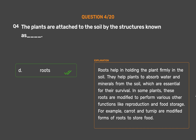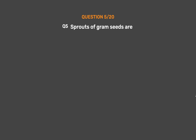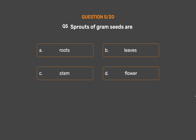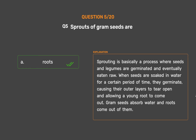In some plants, roots are modified to perform various other functions like reproduction and food storage. For example, carrot and turnip are modified forms of roots to store food. Question 5: Sprouts of gram seeds are — Option A: Roots, Option B: Leaves, Option C: Stem, Option D: Flower. The correct answer is Option A, Roots. Sprouting is a process where seeds and legumes are germinated and eventually eaten raw. When seeds are soaked in water for a certain period of time they germinate, causing their outer layers to tear open and allowing a young root to come out. Gram seeds absorb water and roots come out of them.